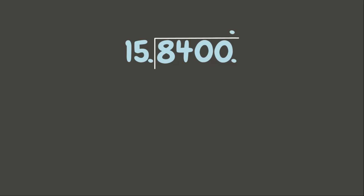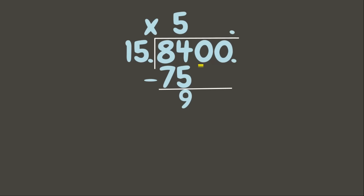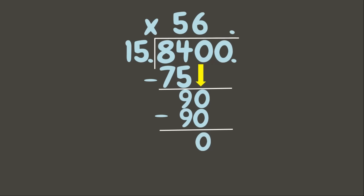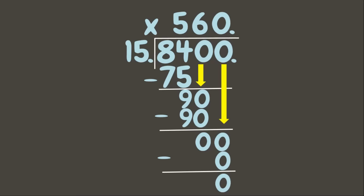Now we are dividing 8400 by 15. 84 divided by 15 is 5. 5 times 15 is 75. 84 minus 75 is 9. Bring down 0. 90 divided by 15 is 6. 6 times 15 is 90. 90 minus 90 is 0. Bring down 0. 0 divided by 15 is 0. 0 minus 0 is 0. Since our answer is a whole number, we remove the decimal point. Our answer is 560.